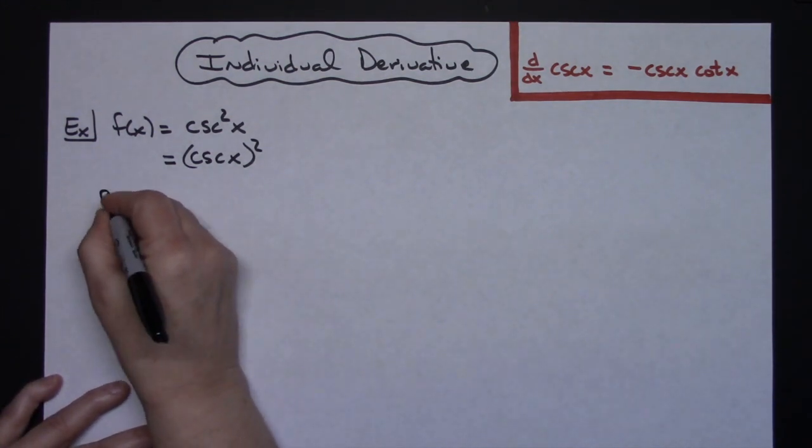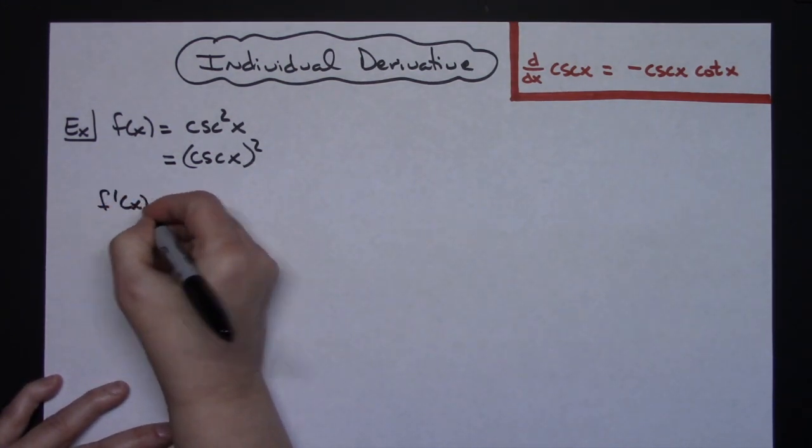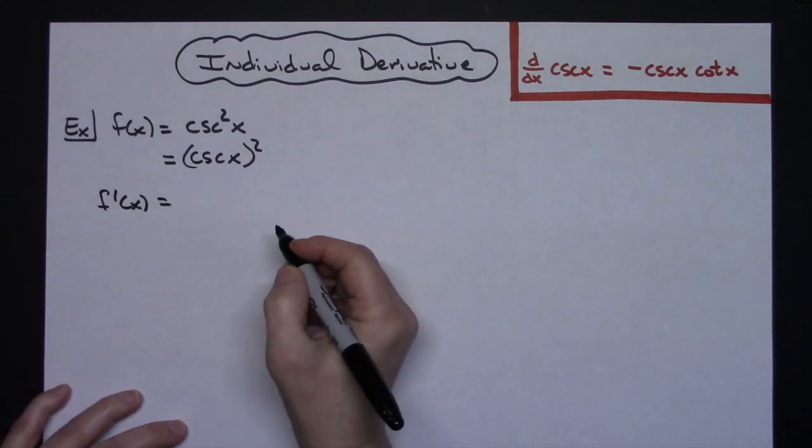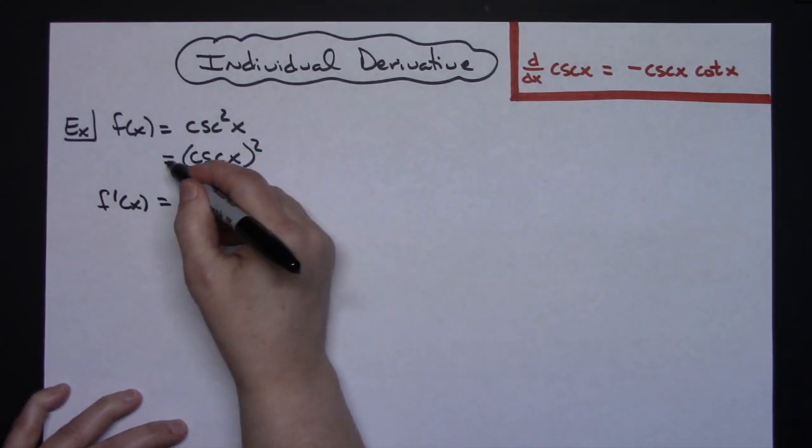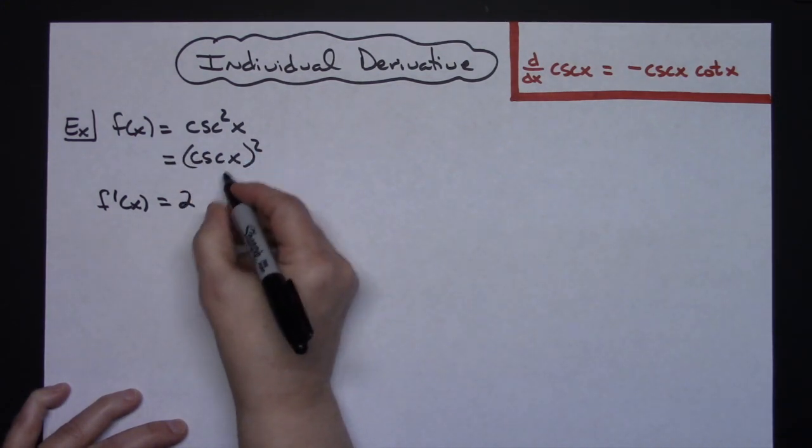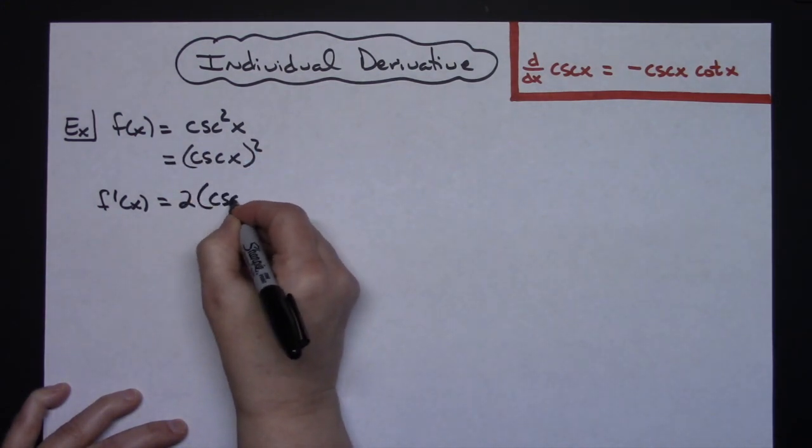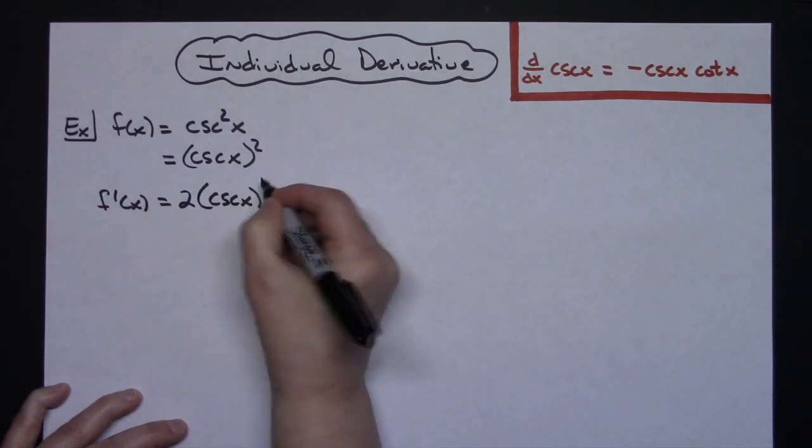Now we're ready to start taking the derivative. So f prime of x is equal to - I want the derivative of the outside function, which is a power function. So I pull that 2 down in front and leave the inside function alone.